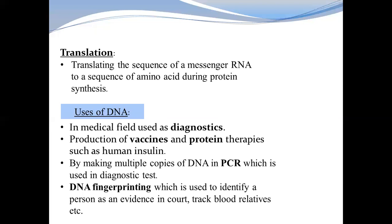When a messenger RNA is produced from DNA, it is carried away from the DNA using a carrier molecule called transfer RNA. After reading the messenger RNA, the sequence is read in groups of three letters. Each group of three letters is called a codon, which corresponds to a specific amino acid address.